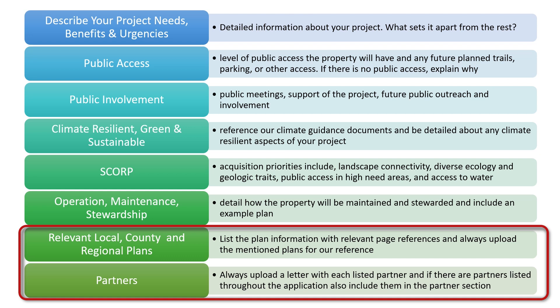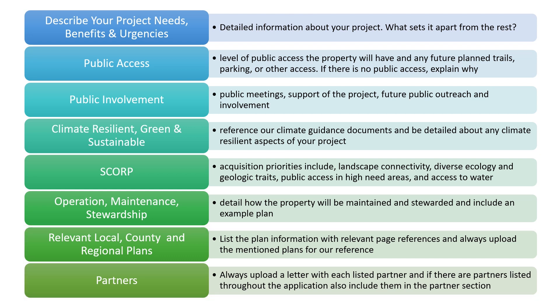The final 20 points are earned by listing relevant local, county, and regional plans to your project and by listing your project partners. When listing project partners, even if they were listed throughout the application, please also be sure to include them in the partners section as well. If you upload partner support letters, they must also be listed in the partners section of the application. We do check that any partners listed in the section also have a letter uploaded in the application. For the plan section, the SCORP should not be listed as one of your relevant plans. It is important to carefully read and answer all of the criteria questions and include as many project-specific details as possible.